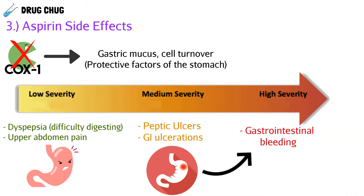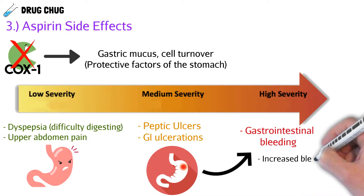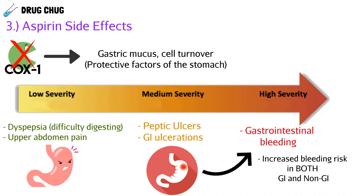If it gets severe enough, it can actually lead to gastrointestinal bleeding — actual bleeding of the stomach. And it's not only in the stomach; we might see non-GI bleeding as well, because we're blocking thromboxane A2 essentially throughout our entire body.